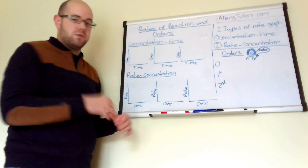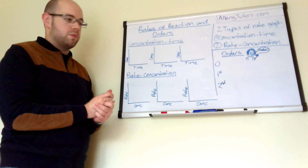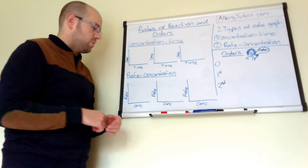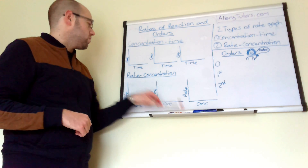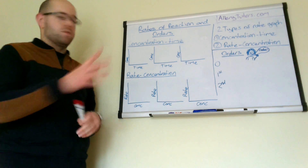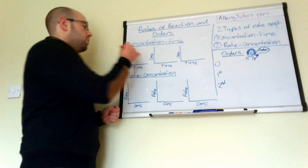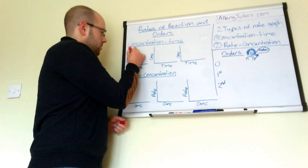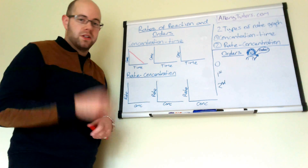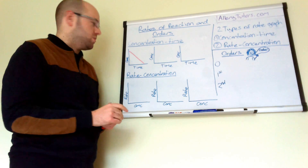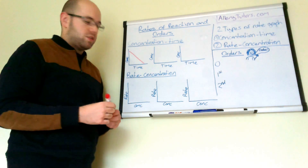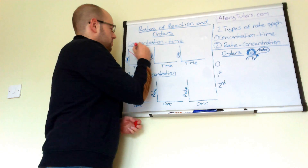I've got three axes here because we've got three different types of graphs that we can produce for A-level chemistry. Starting with concentration against time: if you plot your results and your points all join up in a straight line — in other words, the concentration of your reactants is declining as the reaction proceeds over time in a straight line — we call this zero order.